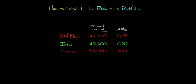In this video, we're going to talk about how to calculate the beta of an entire portfolio. Let's say that you invested $2,000 in Walmart stock, $8,000 in Intel stock, and $10,000 in Amazon. And you know the beta for each of these firms - you can go to Yahoo Finance and look up that Walmart is 0.38, Intel is 0.86, and Amazon is 1.46.